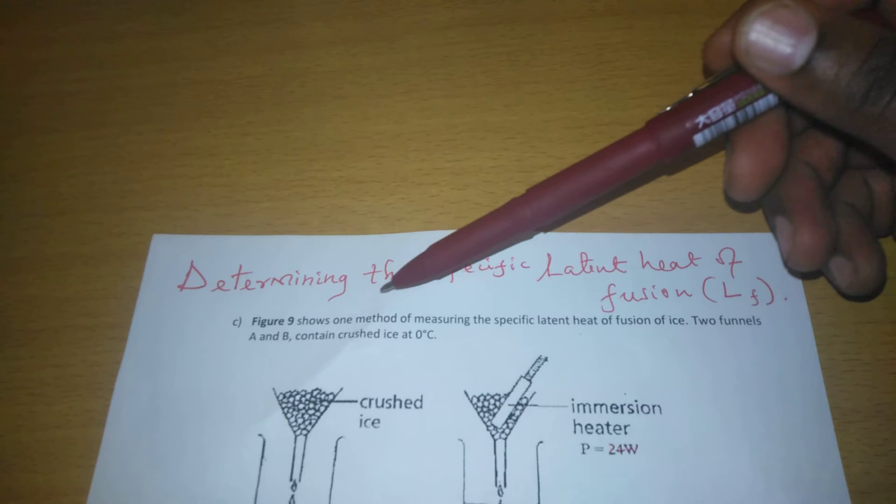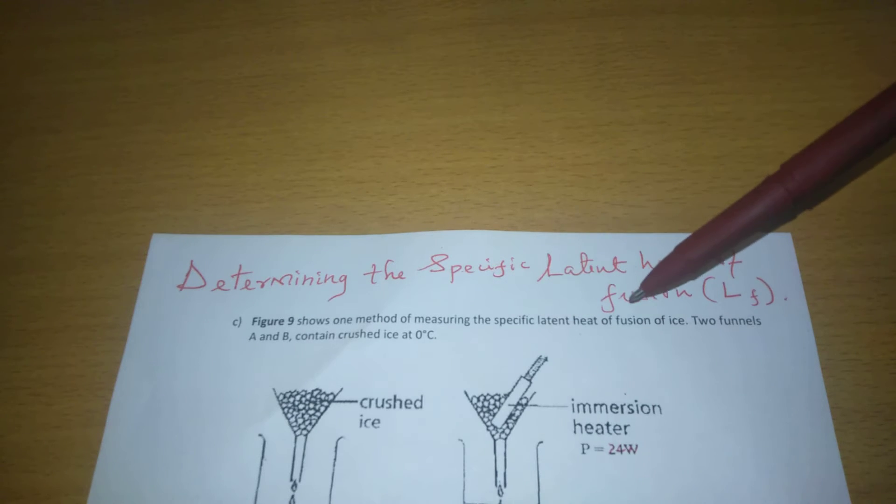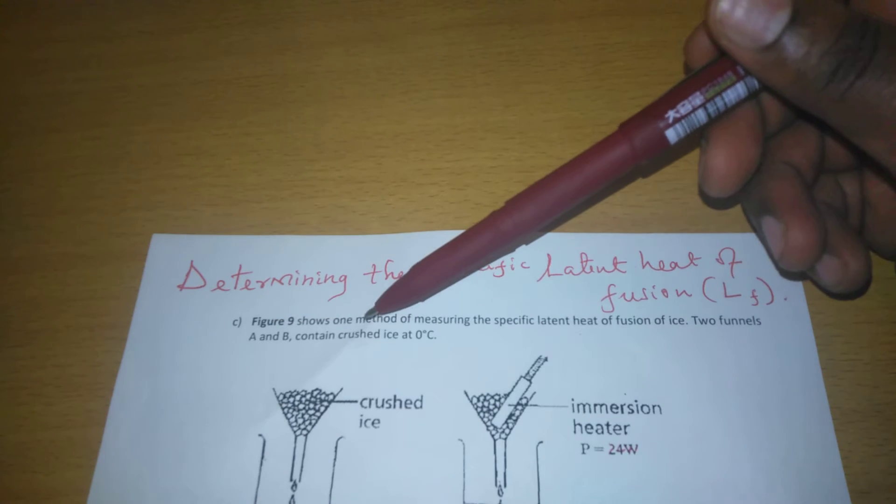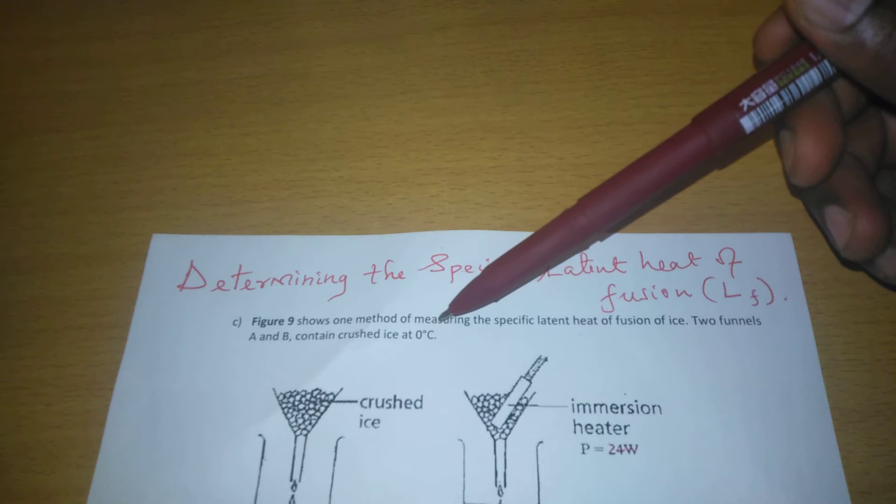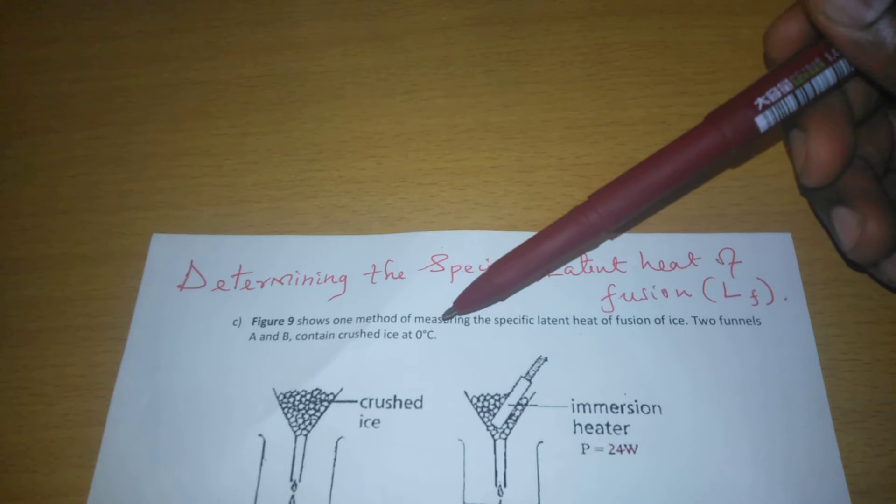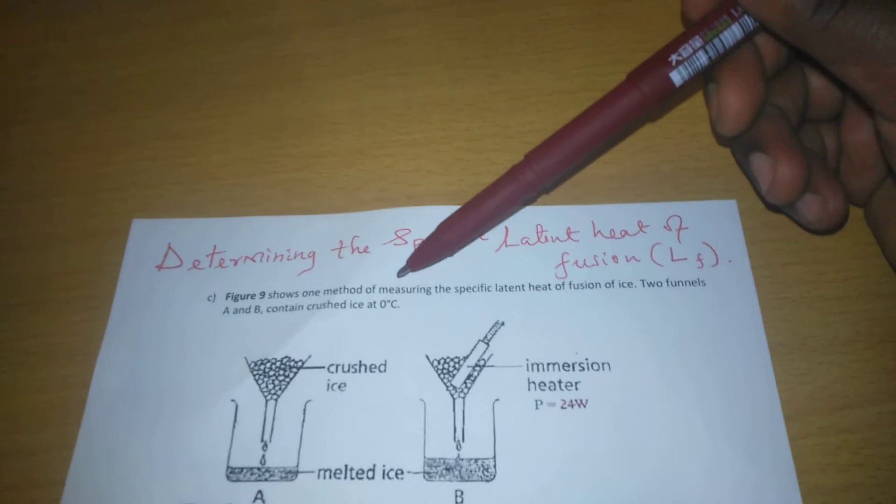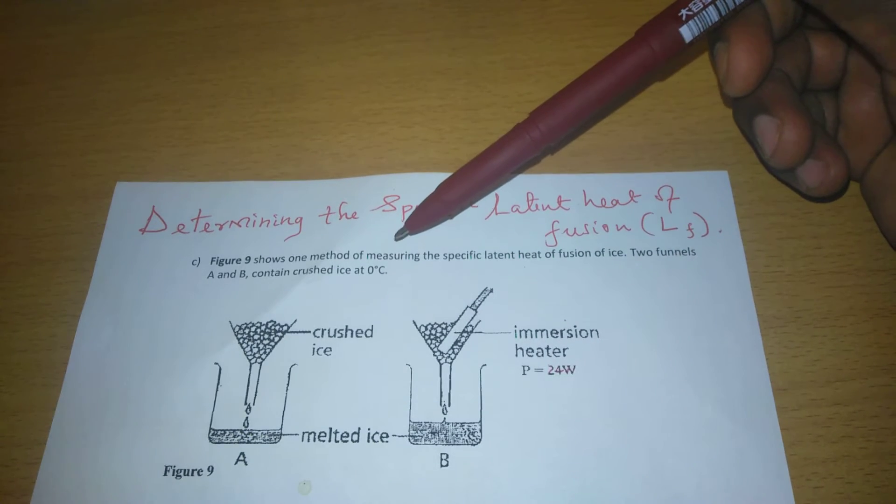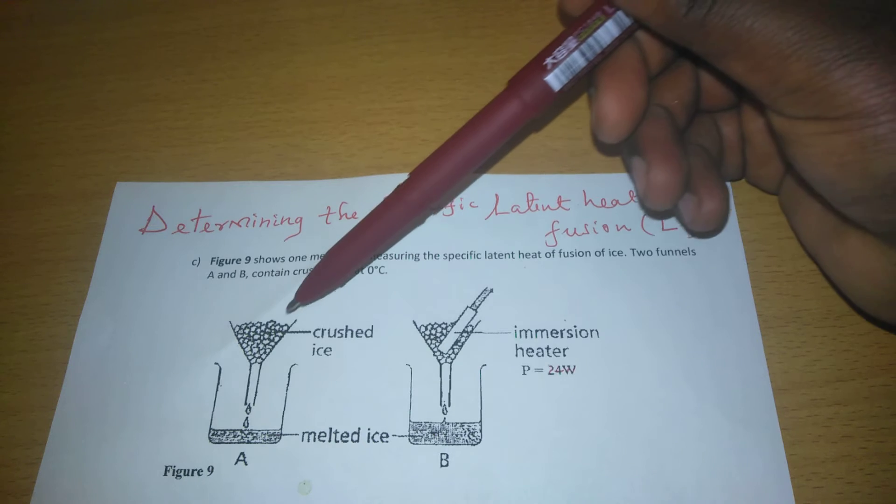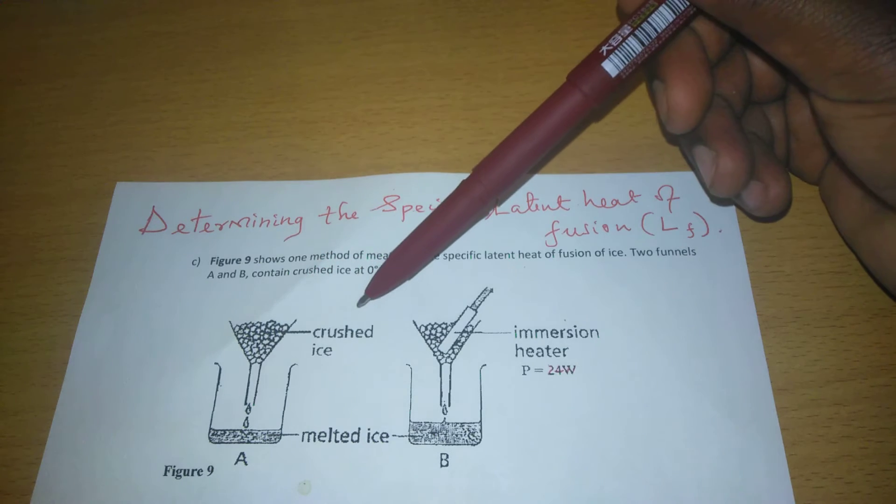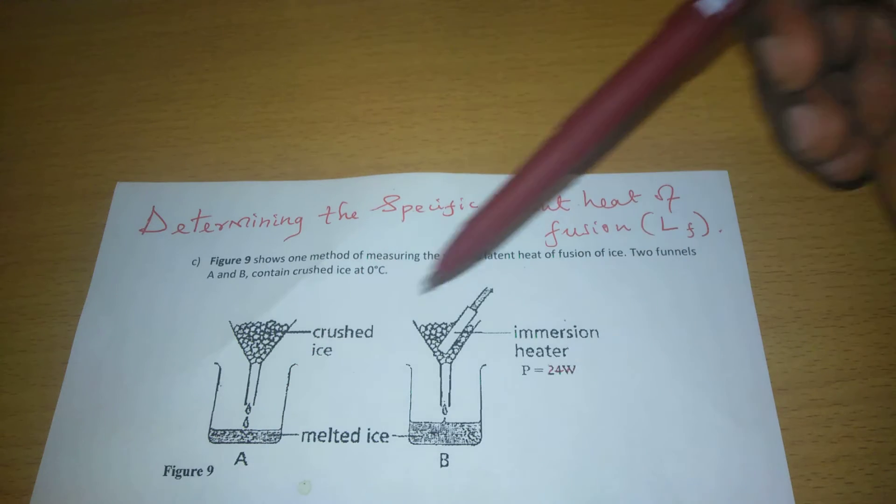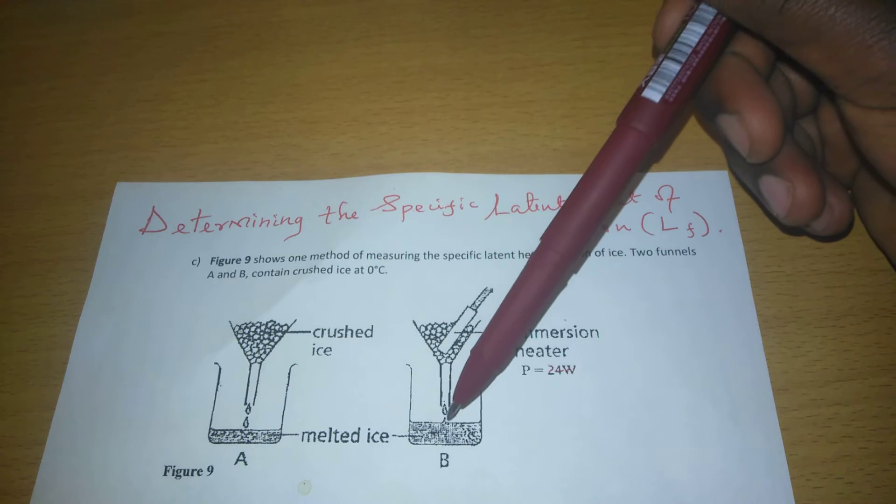Figure 9 shows one method of measuring the specific latent heat of fusion of ice. Two funnels, A and B, contain crushed ice at 0 degrees Celsius. We have crushed ice in figure A and crushed ice in figure B.